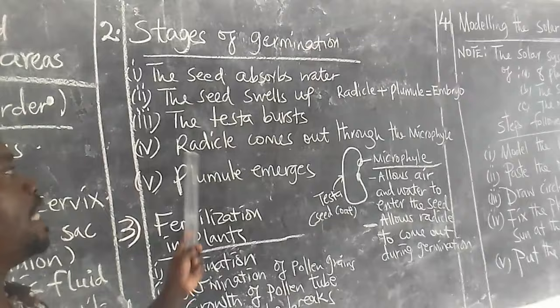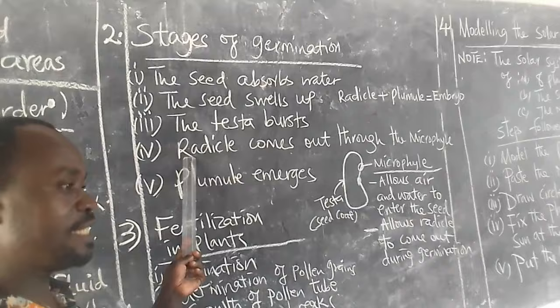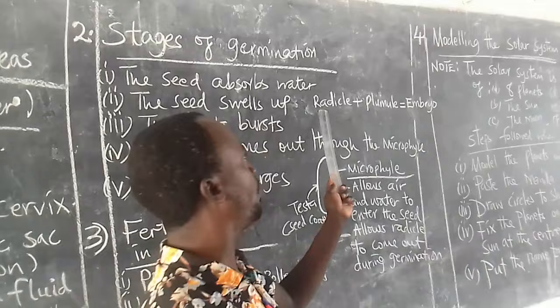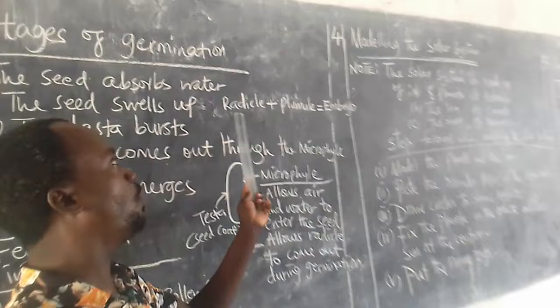The radicle is the part that grows into a root — the part that enters the ground. The plumule is the part that grows into a shoot. The radicle and plumule make up the embryo of a seed.